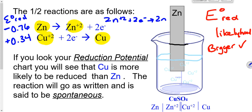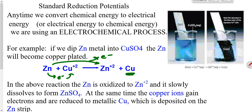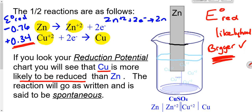Because copper has the bigger reduction potential, copper is more likely to be reduced. The one with the bigger reduction potential is the one that gets reduced. That's exactly what happened in this reaction — copper was being reduced, going from an oxidation number of +2 to an oxidation number of 0. We saw in the half reaction copper being reduced.